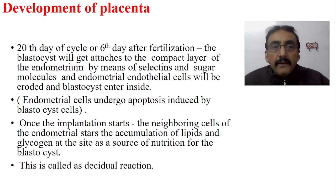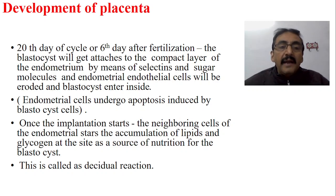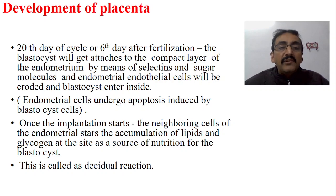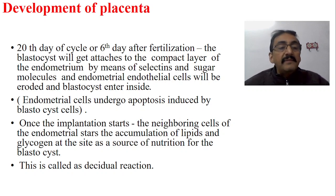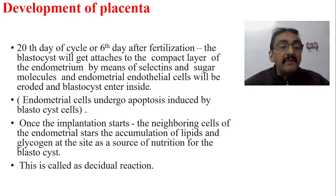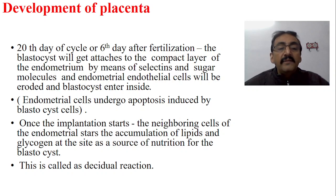Around the 20th day of the cycle, or 6th day after fertilization, the blastocyst will get attached to the compact layer of the endometrium by means of selectins and sugar molecules. The endometrial endothelial cells will be eroded to some extent and the blastocyst will enter inside the endometrium. Endometrial cells undergo apoptosis induced by the blastocyst. Once implantation starts, neighboring endometrial cells accumulate lipids and glycogen at the site as a source of nutrition for the blastocyst. This is called the decidual reaction.